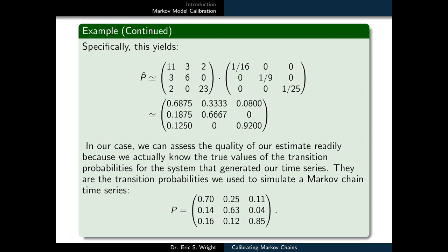P23 is 0, P31 is .1250, P32 is 0, and P33 is .92.